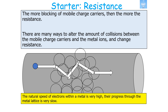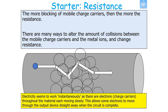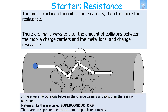The natural speed of electrons within a metal is very high, but their progress through the metal lattice is very slow. The drift velocity of the individual electrons is very slow due to collisions with the metal lattice. Electricity seems to work instantaneously because there are mobile charge carriers throughout the material, allowing some electrons to move through the output device straight away when the circuit is complete. Materials with no collisions and no resistance are called superconductors, but currently there are no superconductors at room temperature.